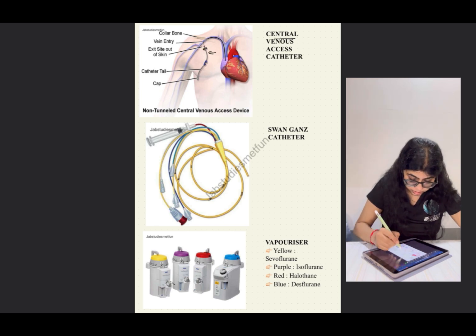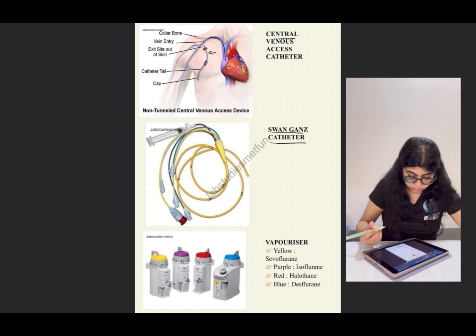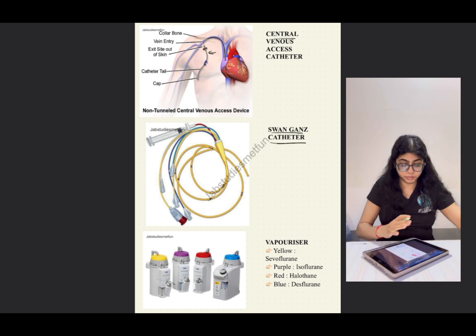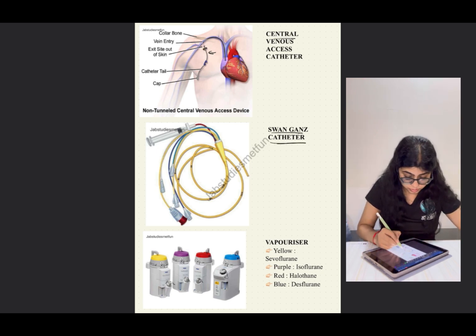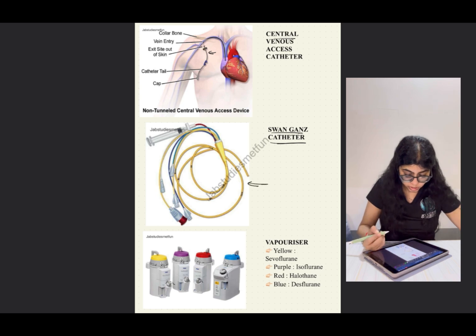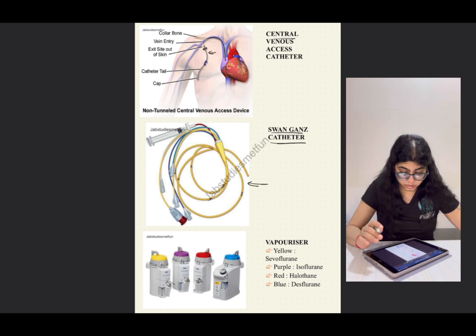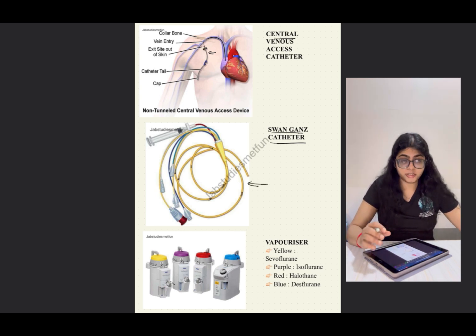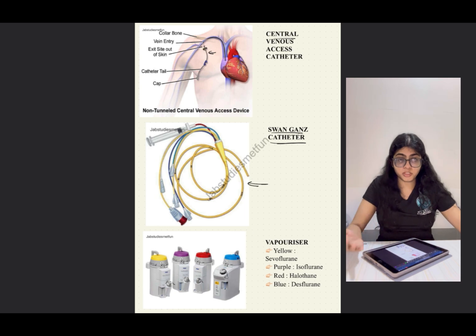For the central venous catheter, you need to remember where the catheter is positioned. The Swan-Ganz catheter looks like multiple different-colored wires, with the main wire being yellow. They don't ask much theory about it — you only need to identify it.